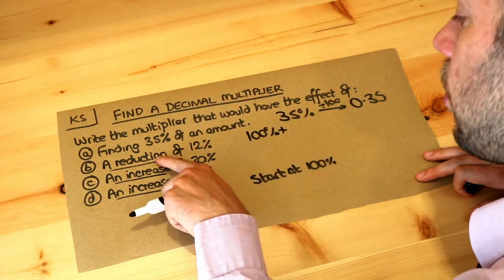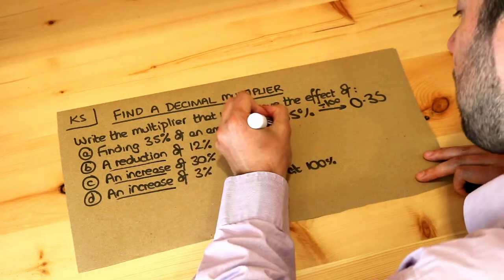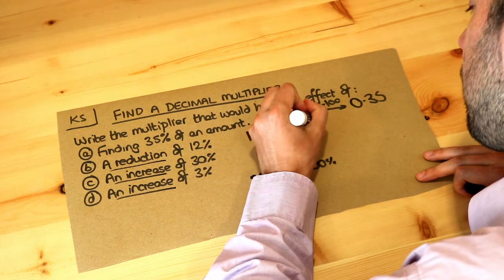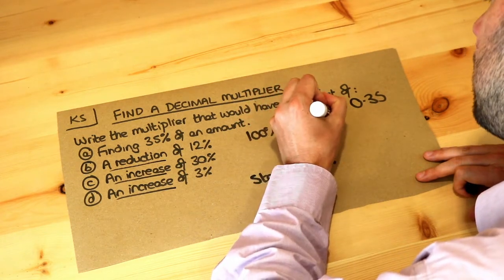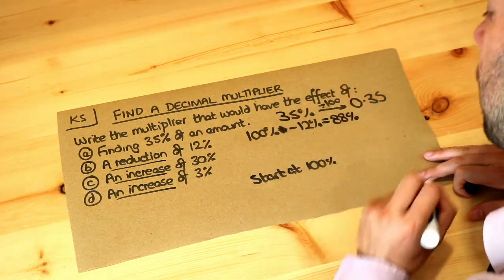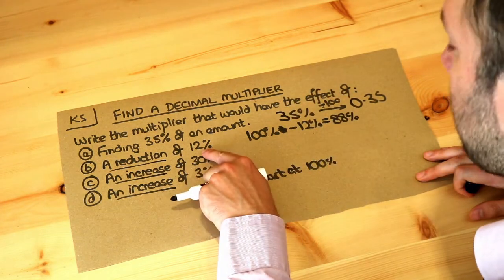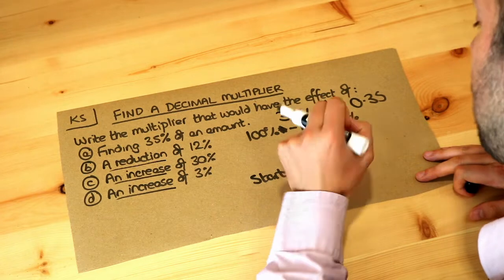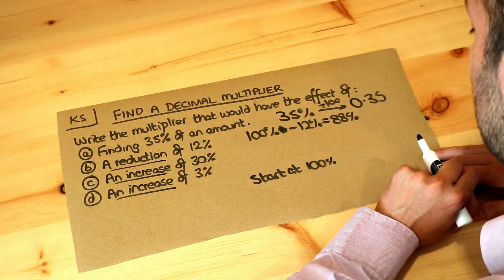And then you're reducing it by 12%. Sorry that should be a minus, so minus 12%. So it would drop to 88% of its value. So therefore to reduce something by 12%, that's the equivalent of finding 88% of its value.